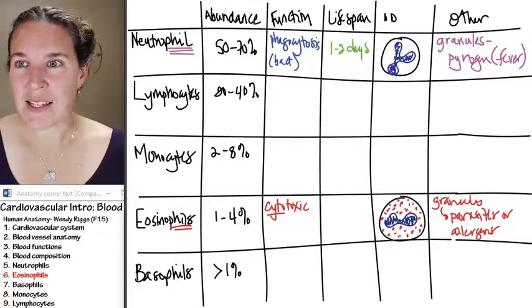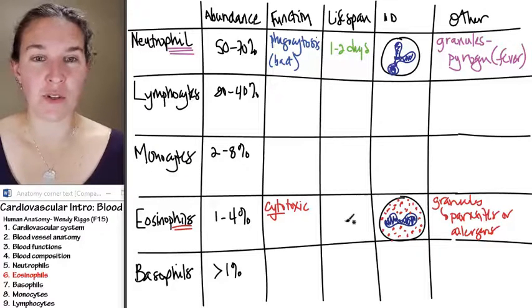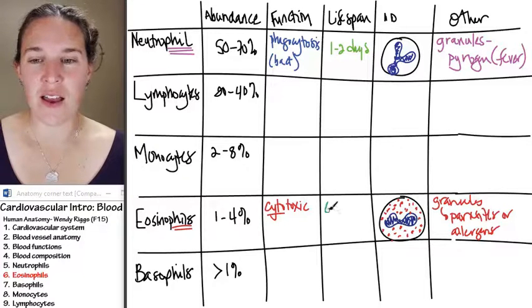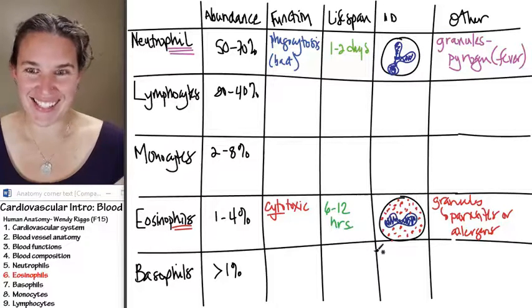And then the lifespan of these guys, are you ready for this? You thought one to two days wasn't very long like those poor neutrophils. They don't get to live very long. Six to 12 hours. Seriously, they only live for six to 12 hours.